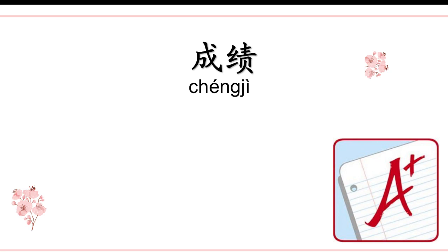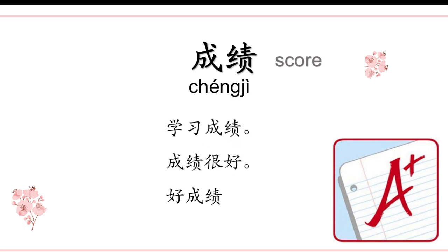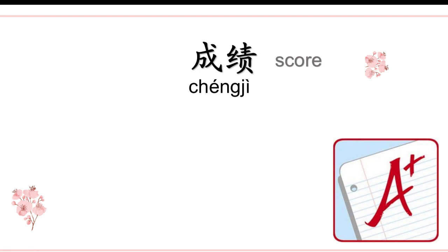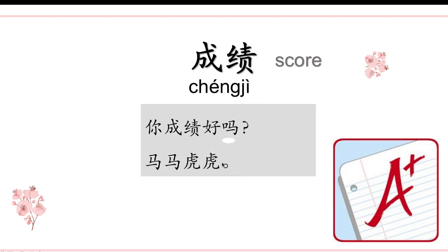Continue. 成绩。成绩 means score. 学习成绩 — academic score. 成绩很好 — I get a high score. 好成绩 — a good score. And in the dialogue, we have the sentence 你成绩好吗？马马虎虎。